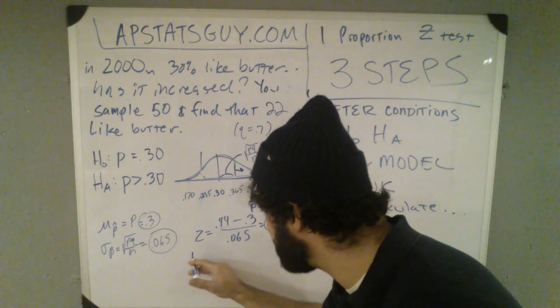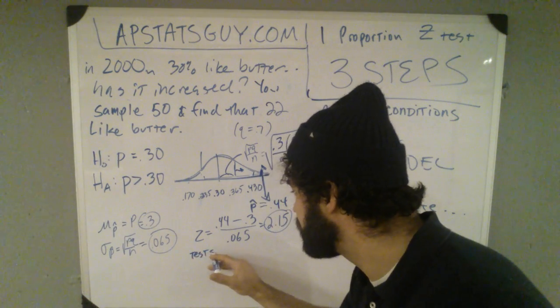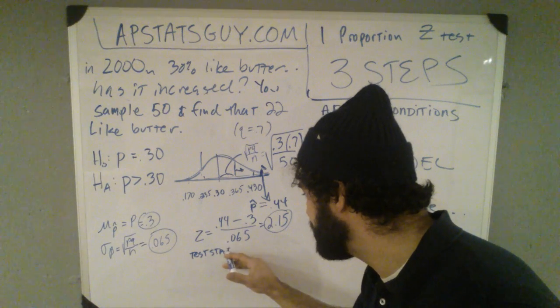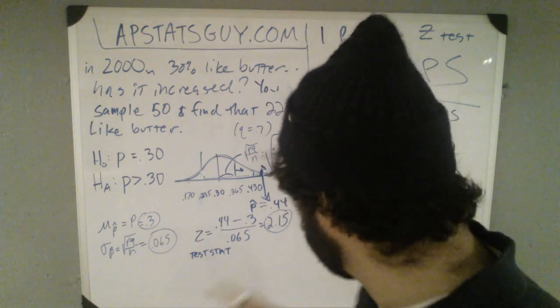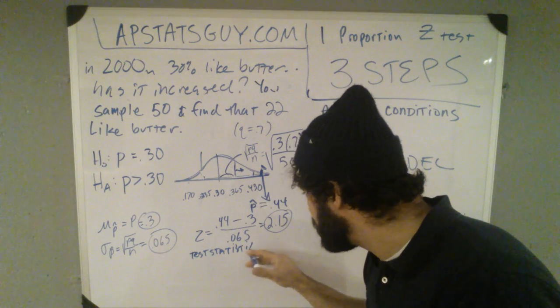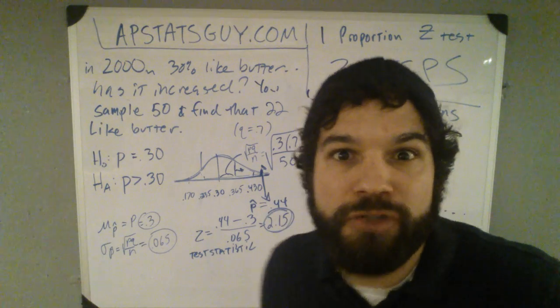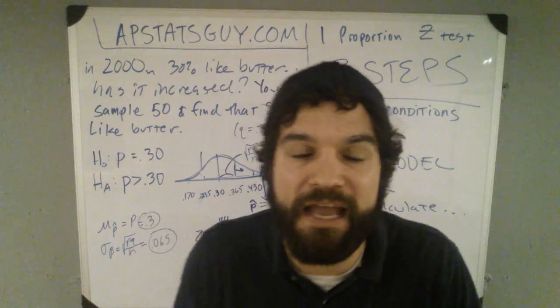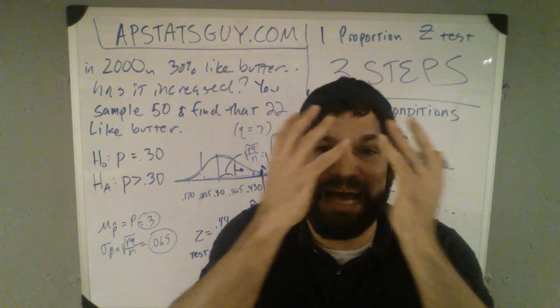That thing right there, that's called a test statistic. Why is it a statistic? Because it's the thing that came from your sample. That is statistic. Here's my test statistic. Here's my test statistic. Two standard deviations away from the mean. Oh, my God.